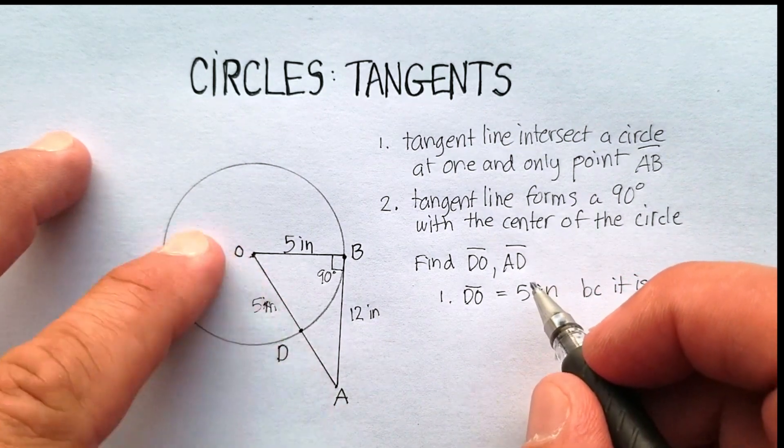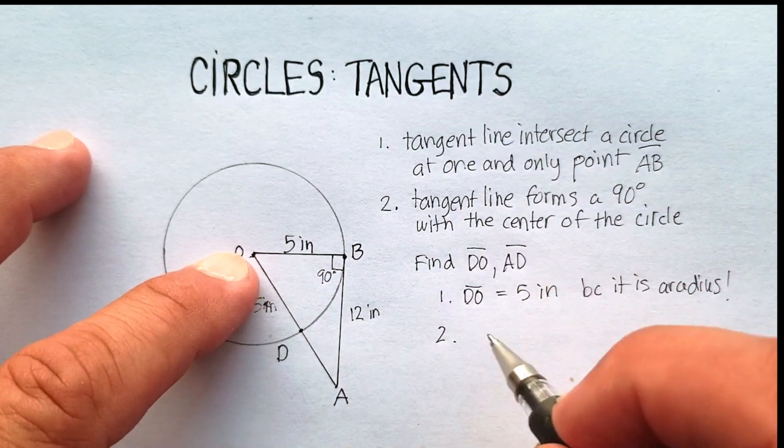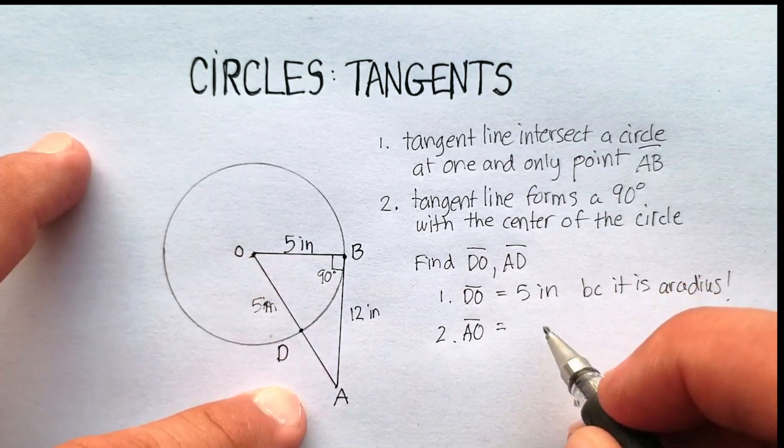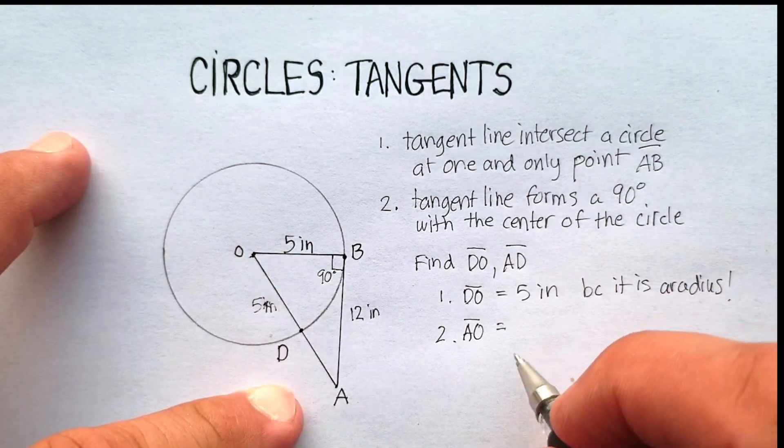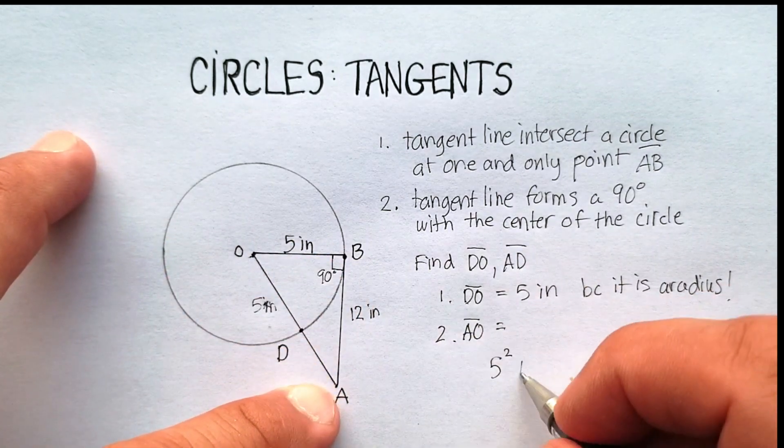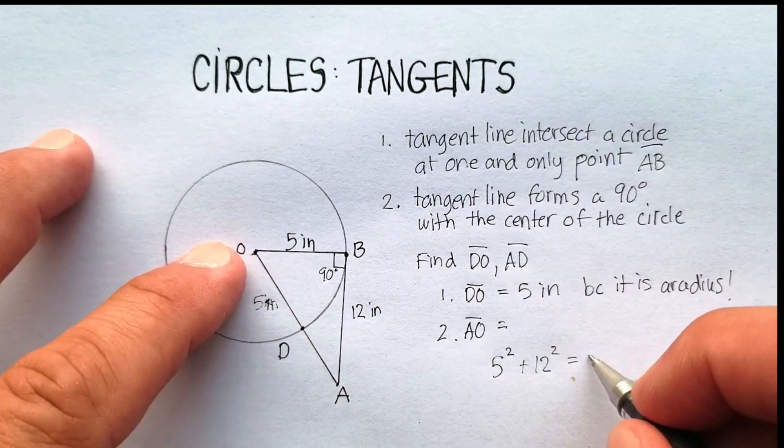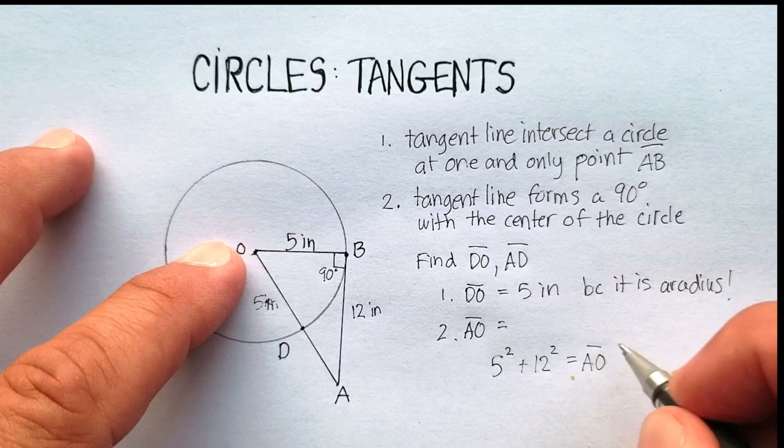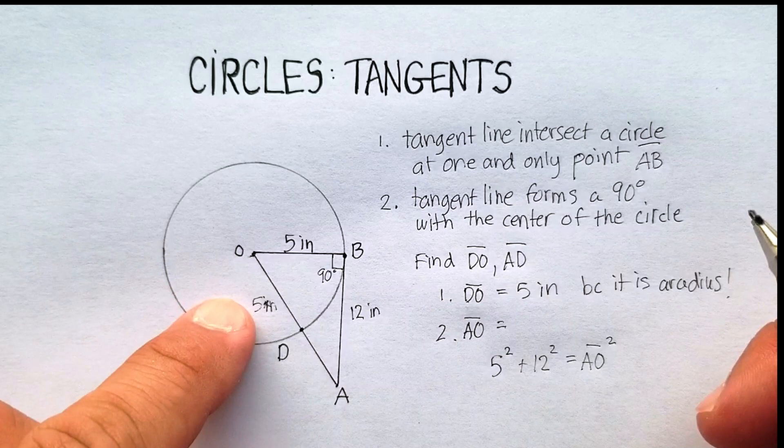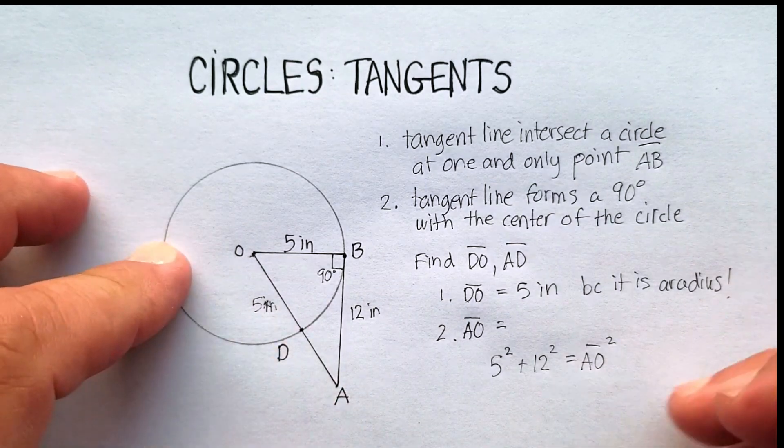or let's just find A-O, actually. And the reason we're going to do that is because we're going to use the Pythagorean theorem. And we're going to say 5 squared, the short side, plus this side, which is 12 squared, should equal A-O squared. Once we find A-O, we're going to subtract the 5 inches here, and we'll get the distance from A to D. So you see my plan? So let's go ahead and figure this out.